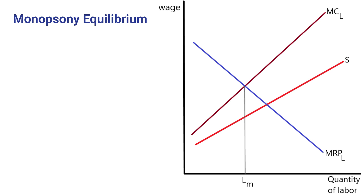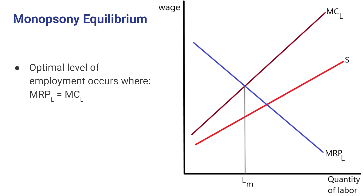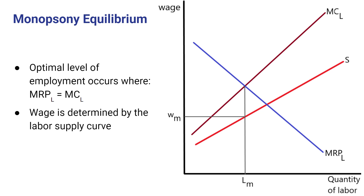Let's talk about what happens in equilibrium. The general principle is that firms will weigh marginal benefits against marginal cost. In the case of this labor market, that involves comparing the marginal revenue product of labor with the marginal cost of labor. The optimal level of employment occurs at the point where marginal revenue product equals the marginal cost of labor, which in this diagram occurs at the level of labor use Lm. To determine the wage, we look at the labor supply curve, because it tells us what workers have to be paid to supply any given quantity of labor. So the wage is determined by the labor supply curve at the level of labor use where MRP equals marginal cost of labor — this is the monopsonistic equilibrium.